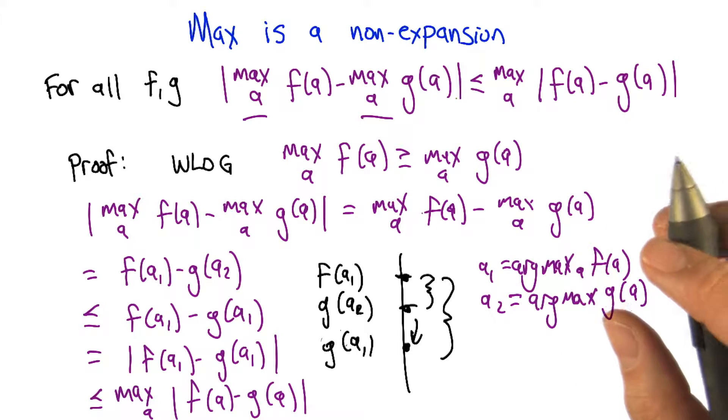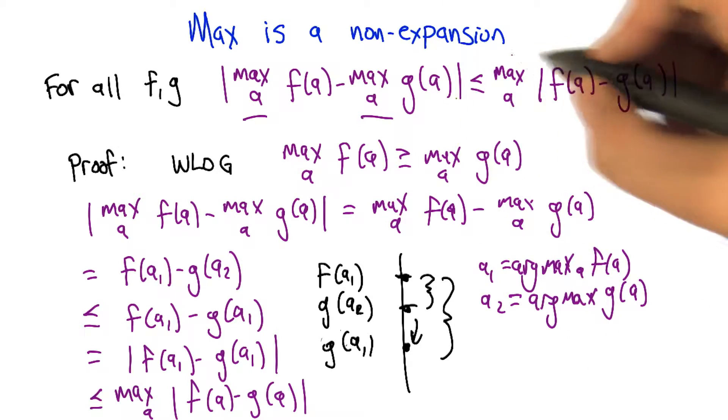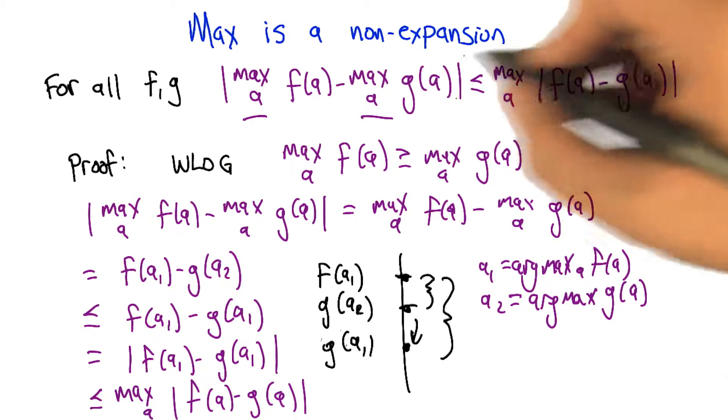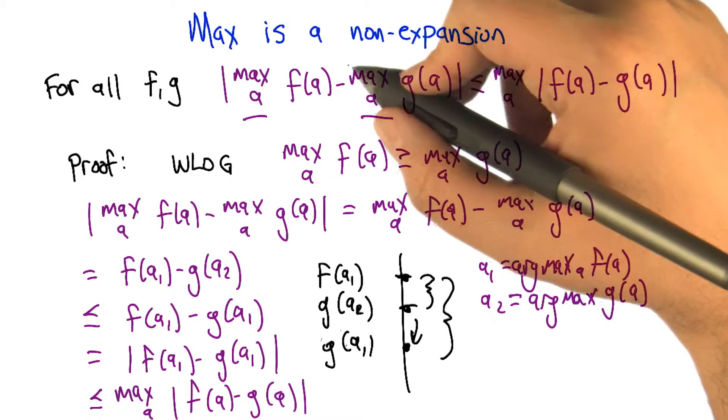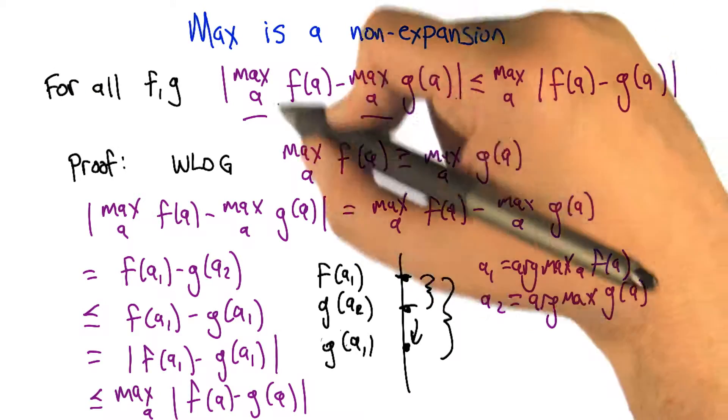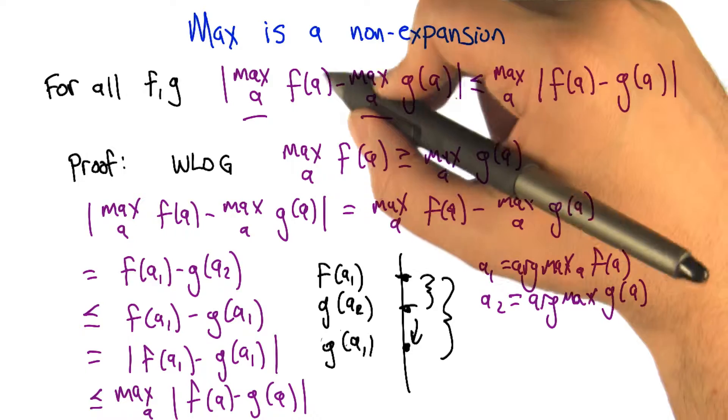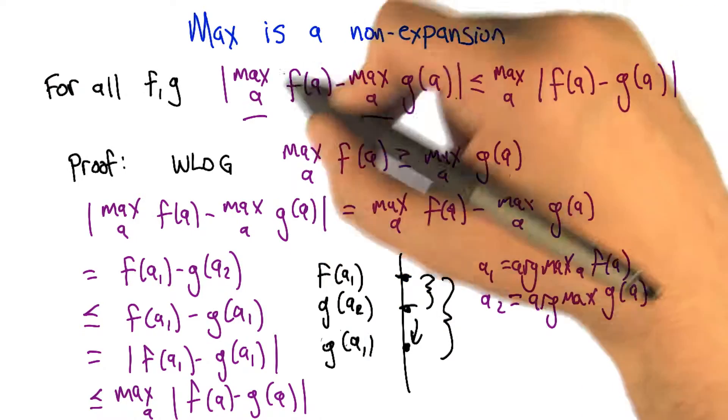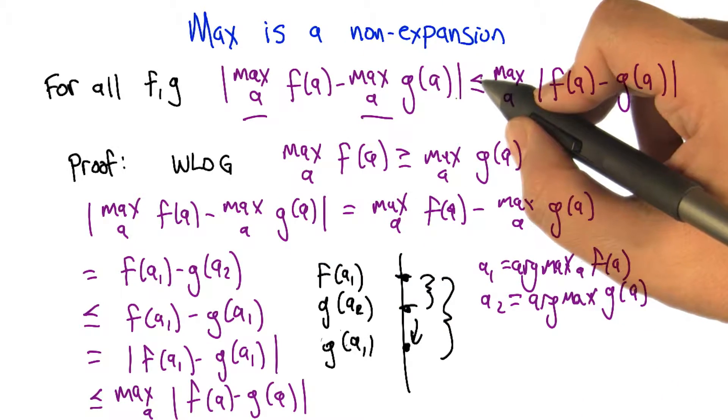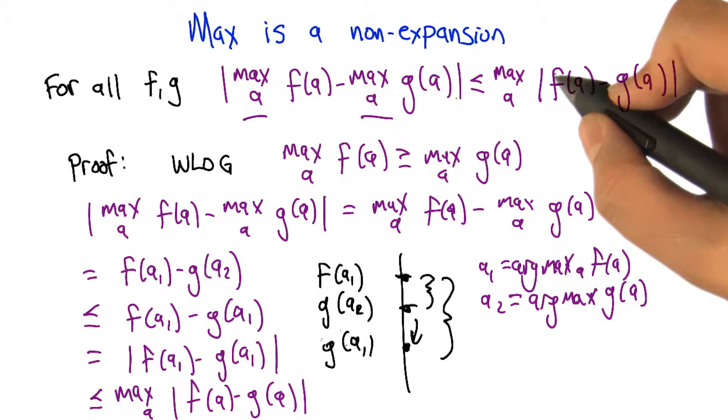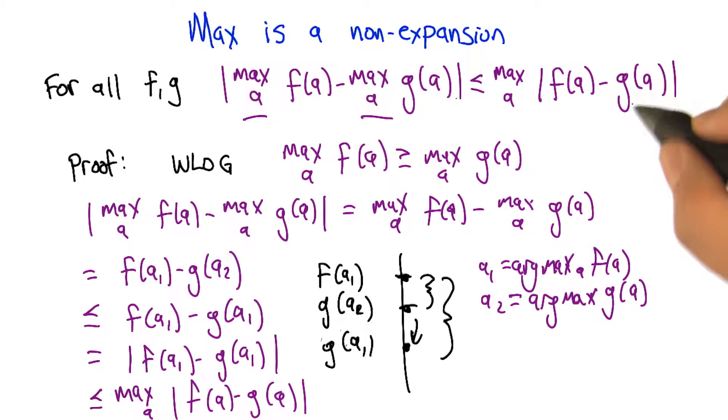But the context was that we had this step in our proof that the Bellman operator is a contraction. We needed it to be true that summarizing the q values at a given state using a max was going to leave us with something that is no farther apart than the maximum difference between the two functions that we started with. Okay. Yeah, I remember that. Maybe you can show me the equation again.